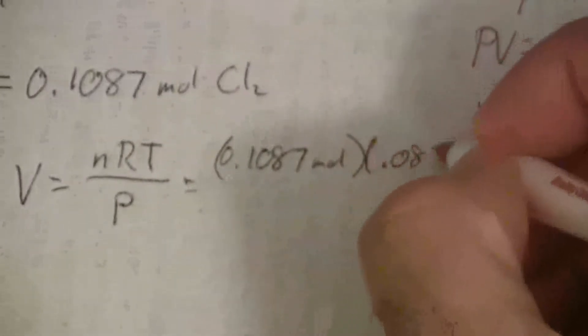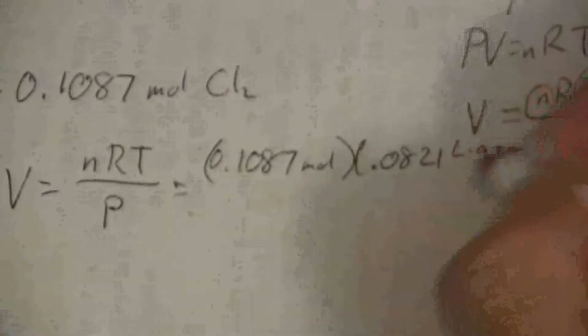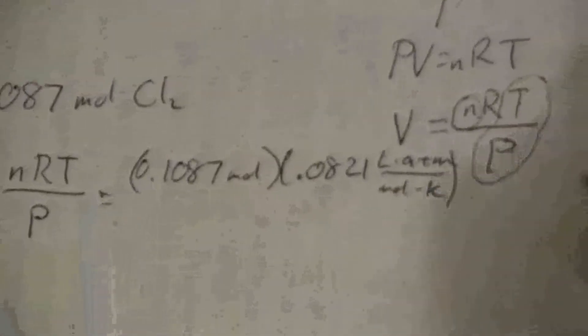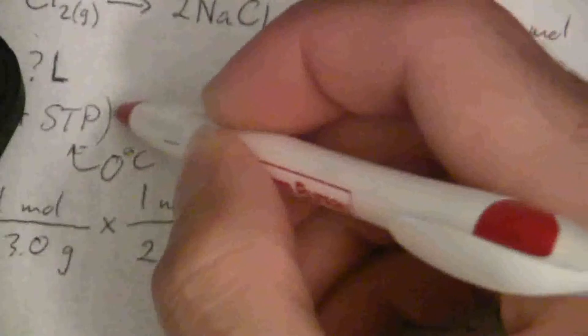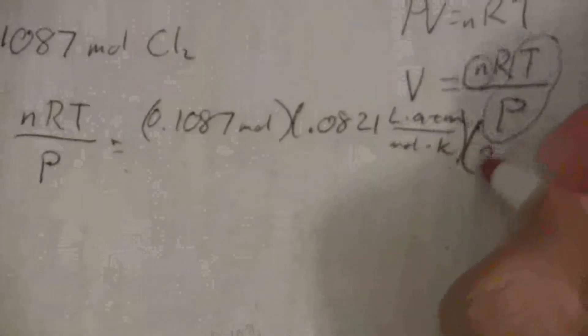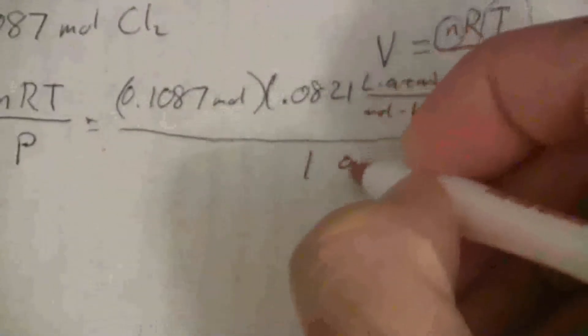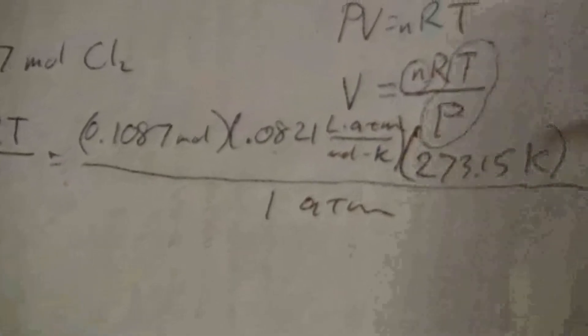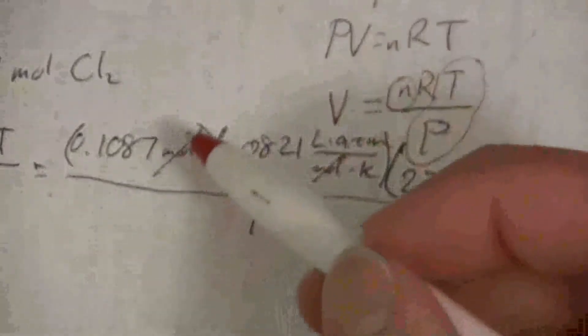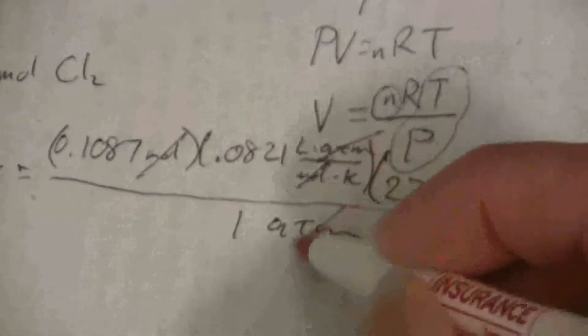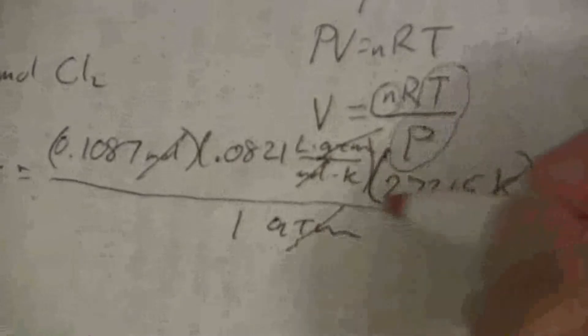So there's my moles of chlorine gas. To find the volume, the volume is NRT over P. So my N is 0.1087 moles of chlorine gas. R is 0.0821 liter atmospheres per mole kelvin. And my temperature, since I'm working at standard temperature and pressure, standard temperature is 0 degrees C, standard pressure 1 atm. So my 0 degrees C, I have to put that in kelvin, so that's going to be 273.15 kelvin. And then I divide this all by my pressure of one atmosphere. So looking at the units, my moles on the bottom there cancels with moles on top, my atmospheres on the top cancels with atmospheres on the bottom, kelvin on top cancels with kelvin on the bottom, and I'm left with liters.